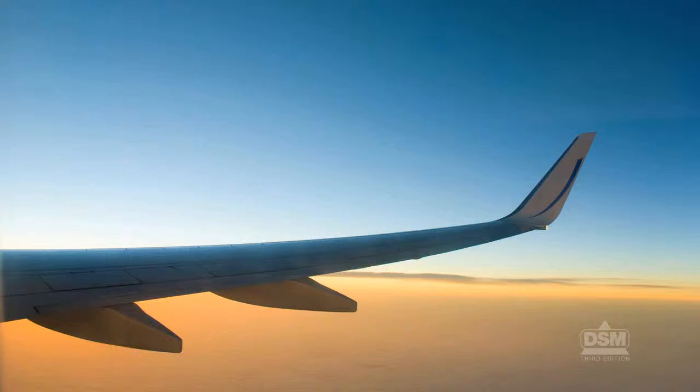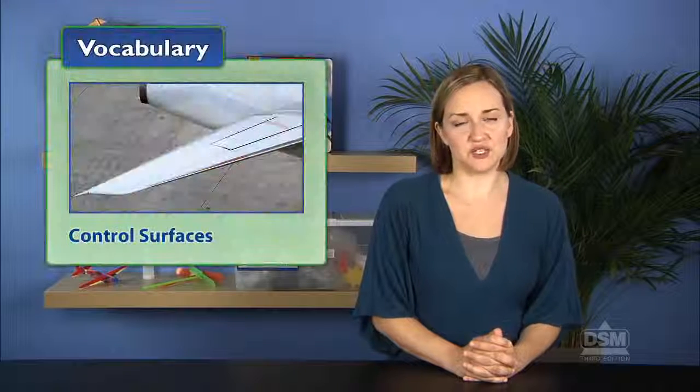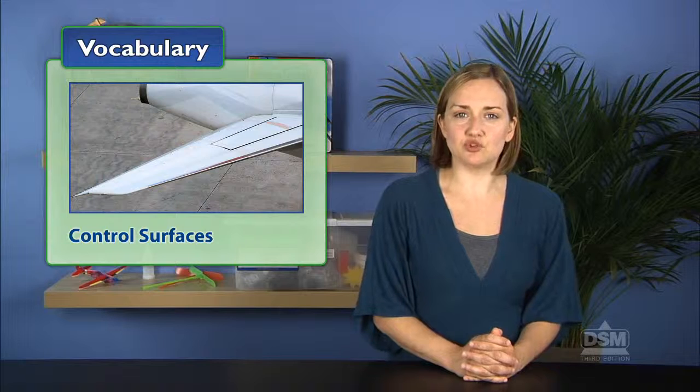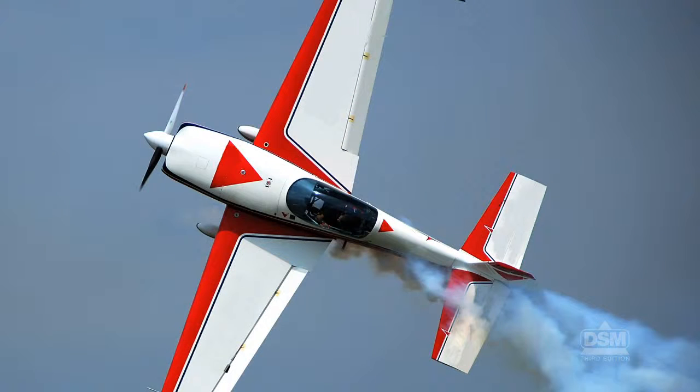Explain that on real planes, the wings and tail assembly have flaps that the pilot can move up and down, or left and right, to control the position of the plane in the air. These flaps are called control surfaces. Control surfaces give the pilot control of the plane's direction by changing the airflow over the surface of the plane, which causes the plane to turn or tilt.